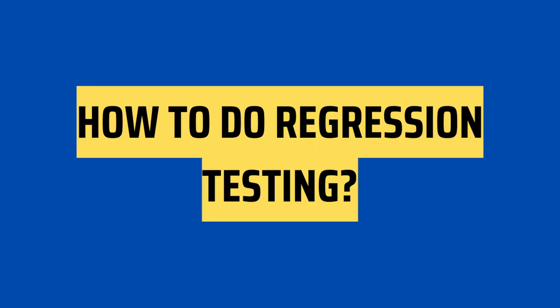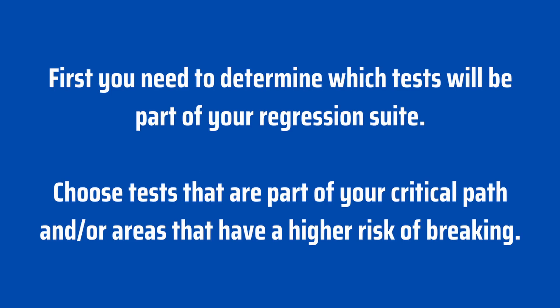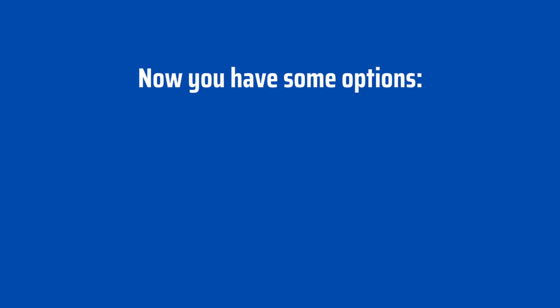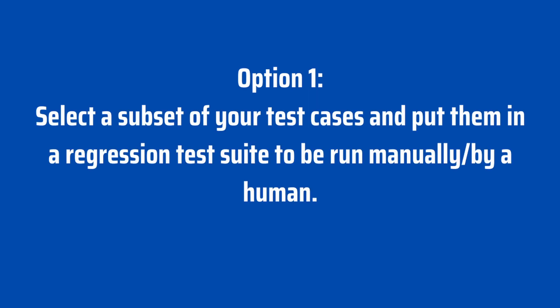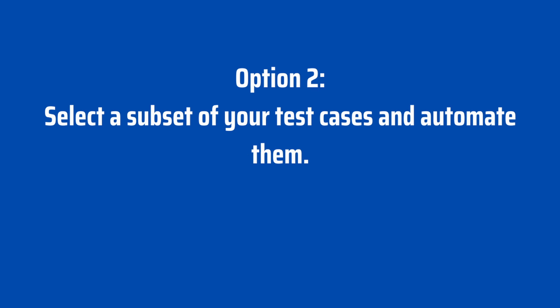How to do regression testing. First, you need to determine which tests will be part of your regression suite, choosing tests that are part of your critical path and or areas that have a higher risk of breaking. Your first option is to select a subset of your test cases and put them in a regression test suite to be run manually. Your second option is to select a subset of your test cases and then automate them.